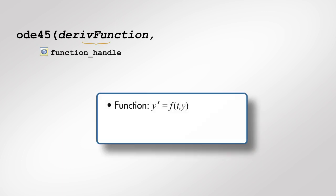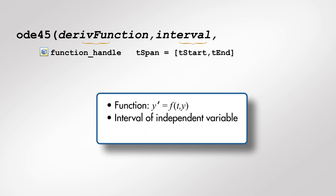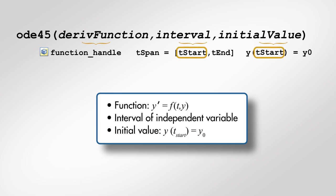The first argument is a function handle representing the derivative of the dependent variable with respect to the independent variable. The second argument is the interval for the independent variable on which we want to approximate the solution. The third input argument is the value of the dependent variable at the start of the solution interval.